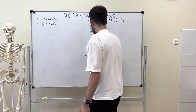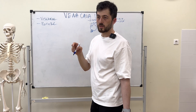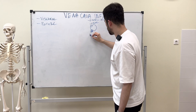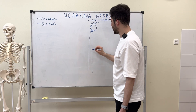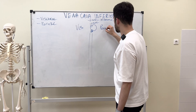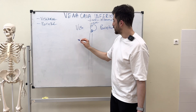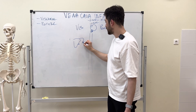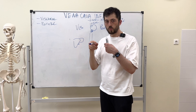Let's talk about the visceral tributaries first. I'll divide them into two parts on this side — visceral on one side and parietal on the other. The first visceral tributary involves a structure right behind the liver.